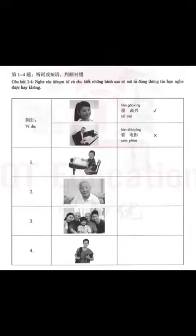第五课 她女儿今年二十岁。Lesson 5: Her daughter is 20 years old this year. 一 听力 — One: Listening.